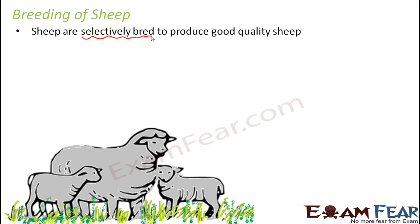The qualities we look for in sheep include thick hair growth. Different types of sheep have different types of hair — some may have coarse hair, some fine hair. Parents are specifically chosen so that they give birth to sheep with good quality soft hair to obtain wool. Every offspring resembles their parents, so we select good quality parents to get good quality wool.